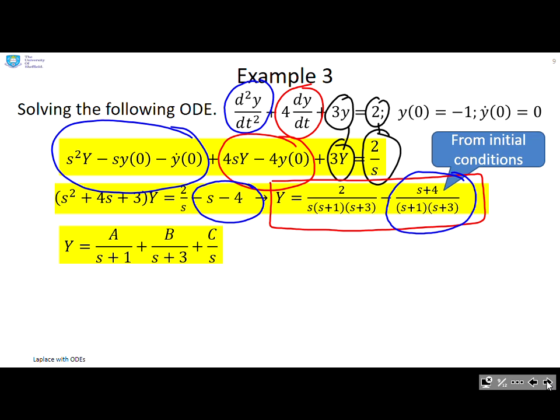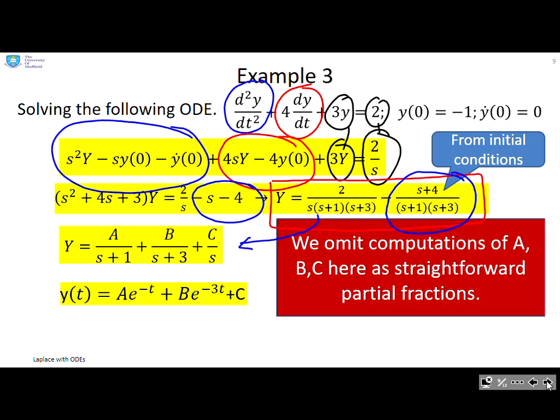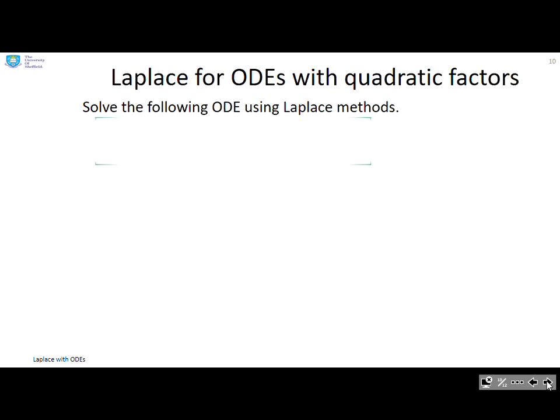And then the final steps: do your partial fraction expansion. I'm not bothering with that detail because that's for another resource. The key thing is you understand the step. So there's the conceptual step. Do your partial fraction expansion. And once you've got that, you can extract the signal y(t) = a·e^(-t) + b·e^(-3t) + c. We've omitted computations of a, b, and c as straightforward.